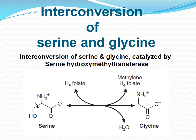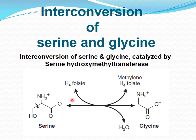Regarding the interconversion of serine and glycine: serine and glycine can be interconverted by a reaction catalyzed by serine hydroxymethyltransferase. The formation of glycine from serine requires tetrahydrofolate, and the biosynthesis of serine from glycine requires methylene tetrahydrofolate. The same enzyme catalyzes both reactions.